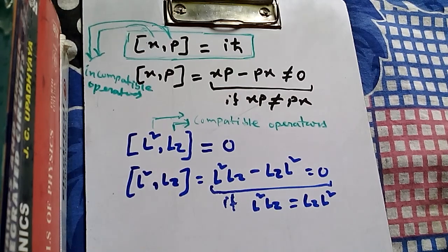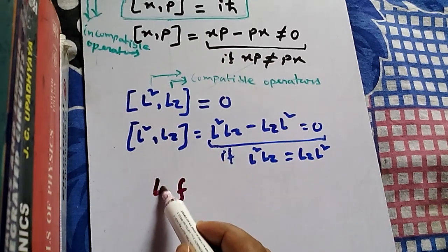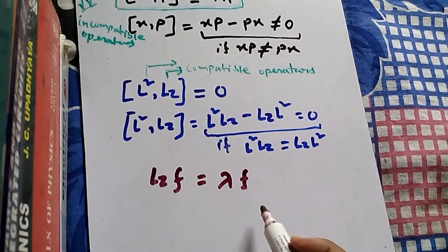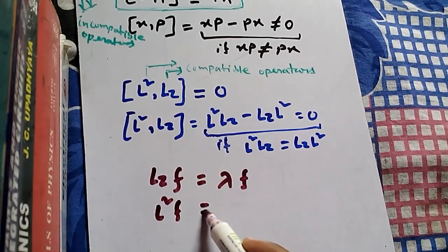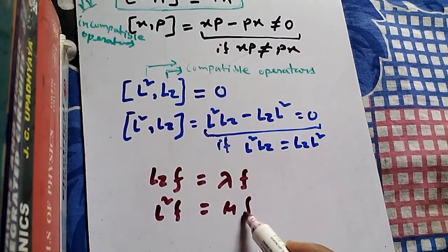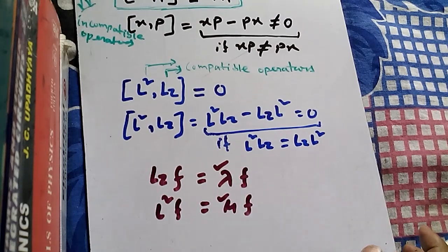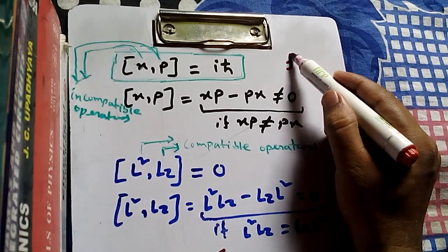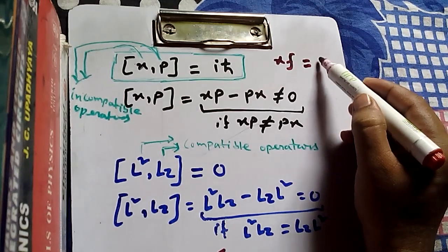Let me show one more thing about what compatible operators mean. If you have an eigenfunction f and you operate Lz on it, you get an eigenvalue and the function is returned. Then if you apply L-squared on the same function, you again get another eigenvalue and the same function is returned. Both eigenvalues are certain, definite eigenvalues.